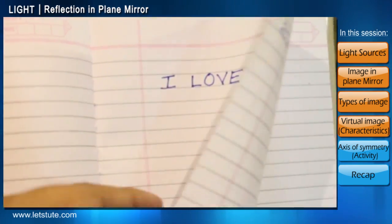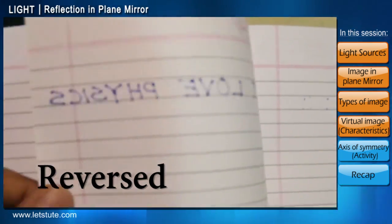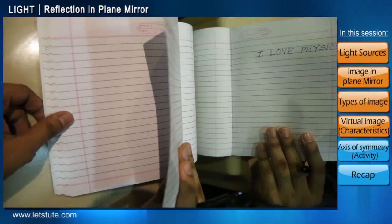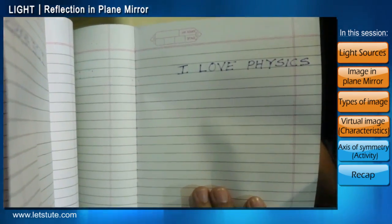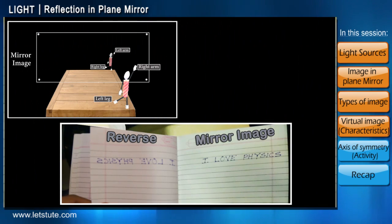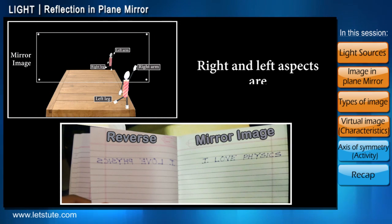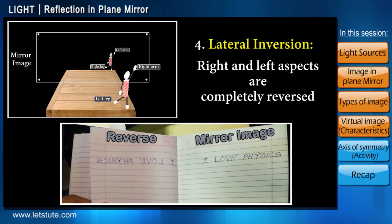The same effect is seen when we write on paper with really strong ink and turn the page — the writing is reversed. Now if we were to hold a plane mirror in front of this, the writing would be aligned properly again. From both these examples we see that the right and left aspects are completely reversed. This property is called lateral inversion.